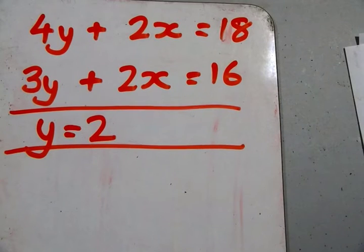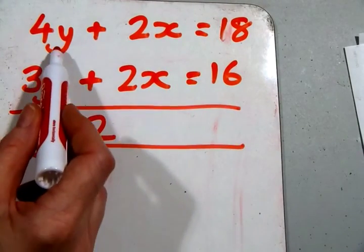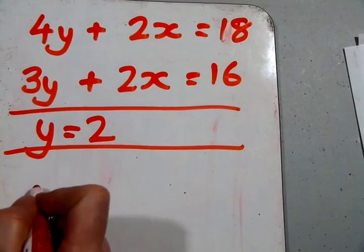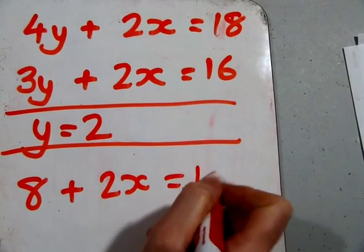So we can substitute the y into one of the equations above. 4y plus 2x equals 18. Well if y is 2, 8 plus 2x equals 18.